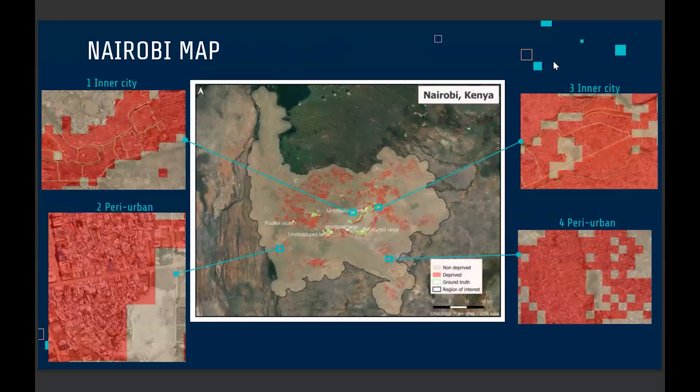We also ran the model for Nairobi, which produced some interesting results. One other thing about the project was that we didn't just focus on the main city — we also looked at peri-urban areas where most researchers don't focus. As you can see in the image on the left, the model was able to detect a place that had never been researched before, and it did a good job.